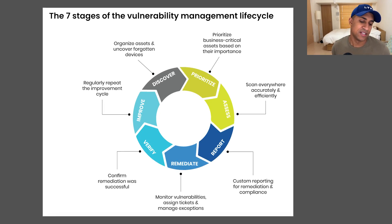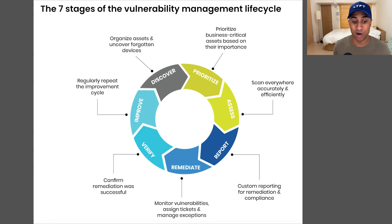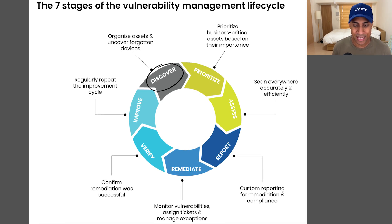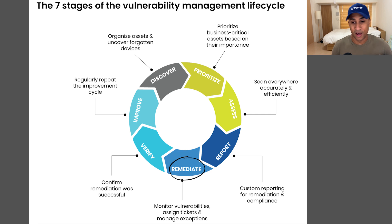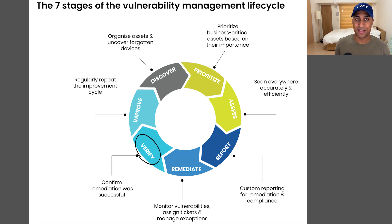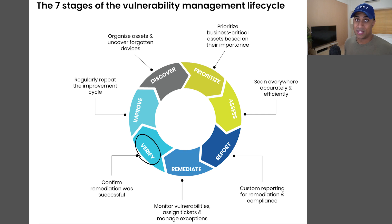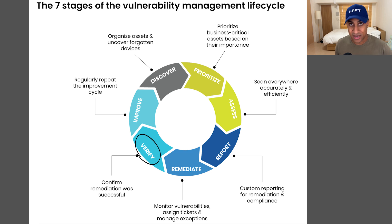Looking at this graphic, it describes the vulnerability management lifecycle, assuming a program is already in place. Discover means doing vulnerability scans of systems. Prioritize means sorting vulnerabilities — some will be super critical, some low or nothing at all — and the importance of the system also comes into play. Then assess, report, remediate (meaning fix them by uninstalling software, updating the OS, or applying secure configurations), verify by re-scanning to make sure the fix worked, and then discover again. But before starting this lifecycle, there's a bunch of other stuff we have to do first.